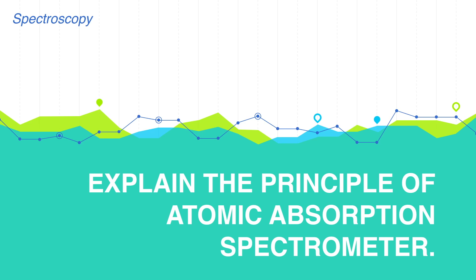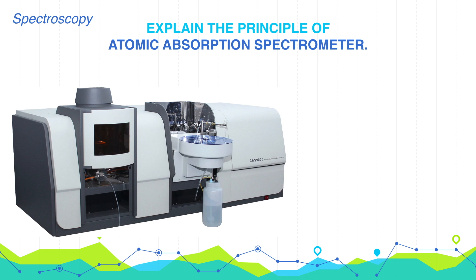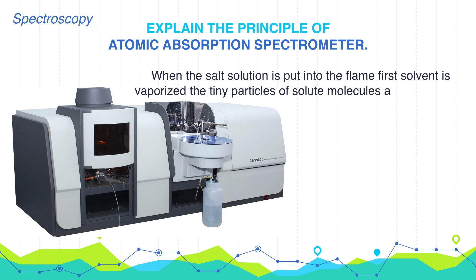Explain the Principle of Atomic Absorption Spectrometer. When the salt solution is put into the flame, first the solvent is vaporized. The tiny particles of solute molecules are produced, which on further heating in the flame are converted into gaseous molecules.